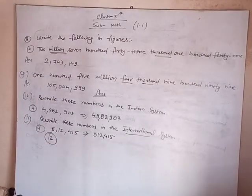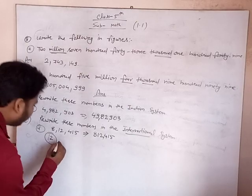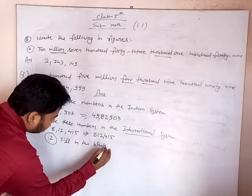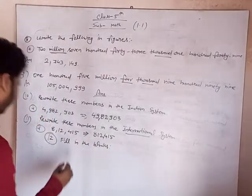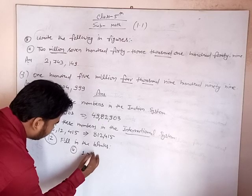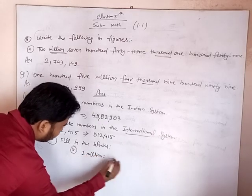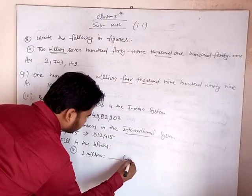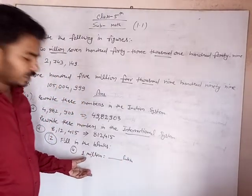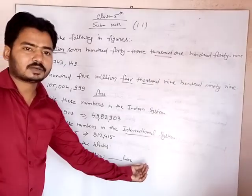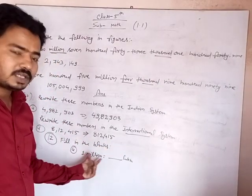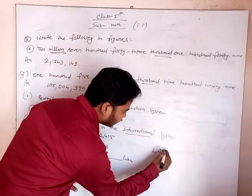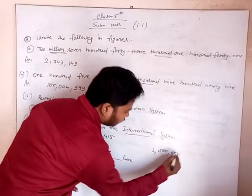Now question number 12: fill in the blanks. A — one million is equal to how many lakhs? First we write one million in the international system: this is the thousands period and this is the ones period.